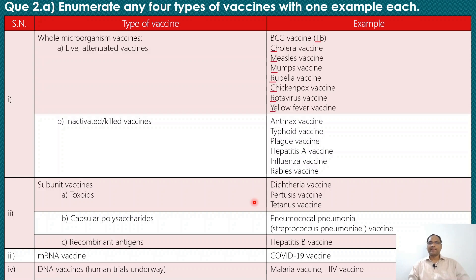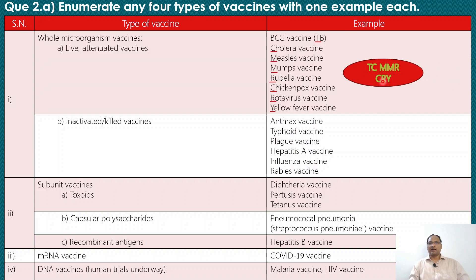To remember these vaccines, here are some mnemonics. For live attenuated vaccines: TC-MMR-CRY — T for tuberculosis, C for cholera (like a ticket checker, TC), MMR for measles, mumps, rubella, and CRY for chickenpox, rotavirus, and yellow fever vaccine. For inactivated or killed vaccines: ATP — anthrax, typhoid, plague — plus hepatitis A, influenza, and rabies.